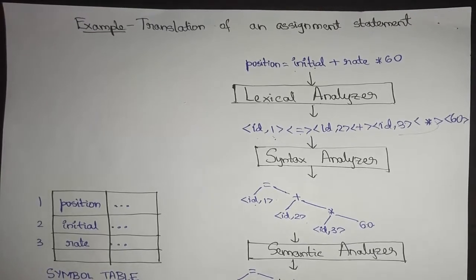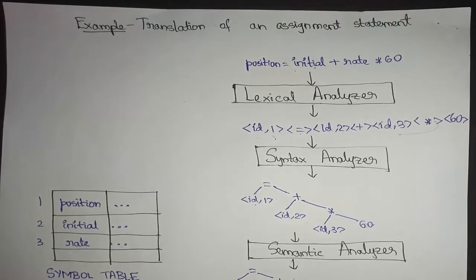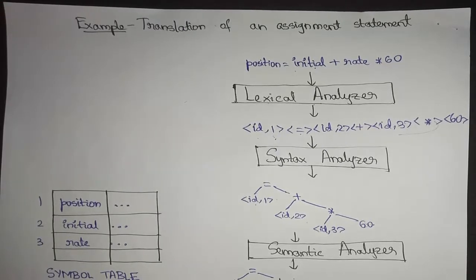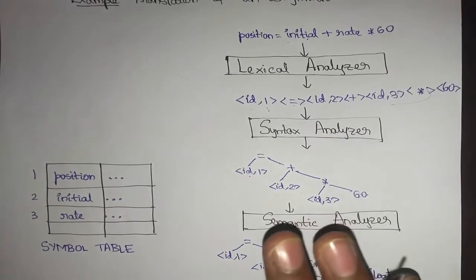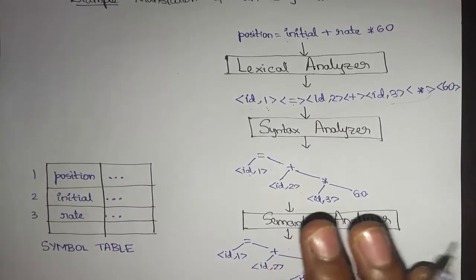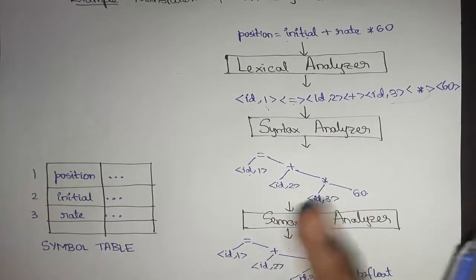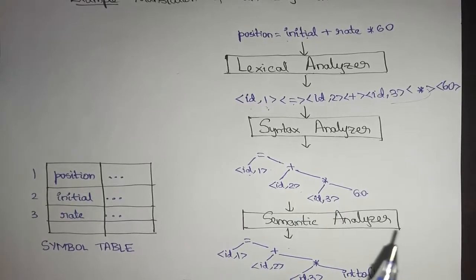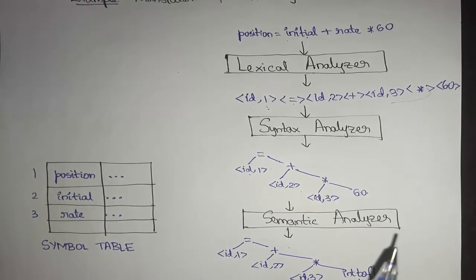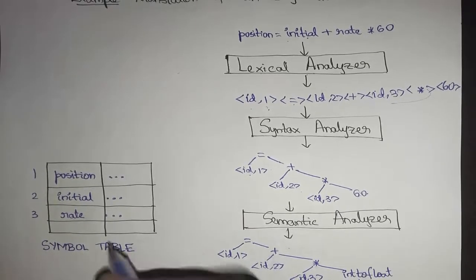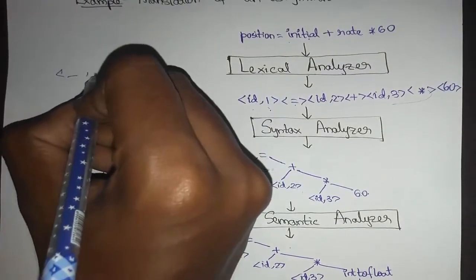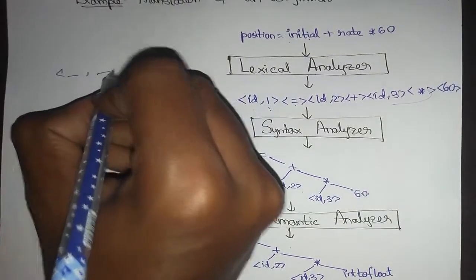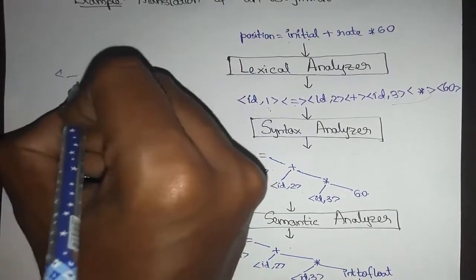The example deals with the translation of an assignment statement: position equals initial plus rate into 60, where the lexical analyzer generates from the character stream a token stream. As discussed in the previous video, the token would be of the form of an identifier and then an attribute name or number. This is the structure of a token.